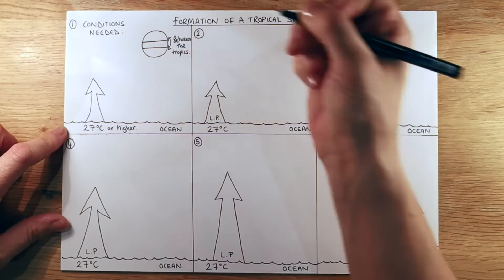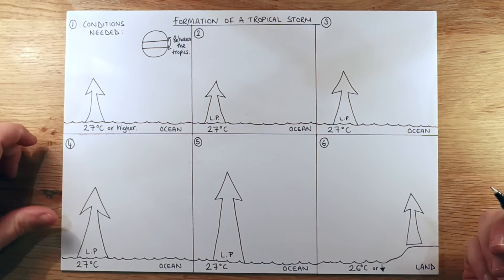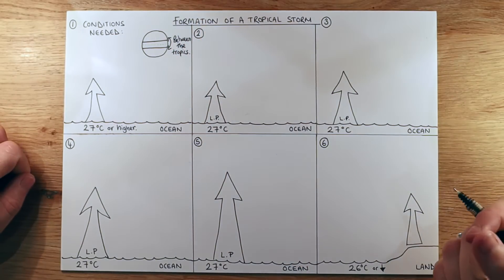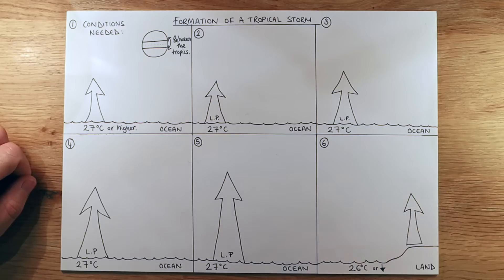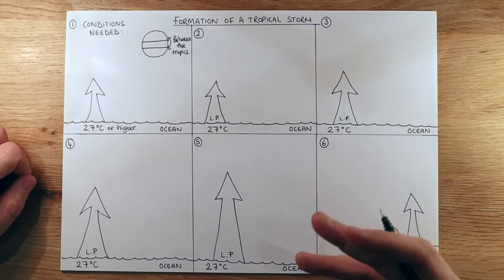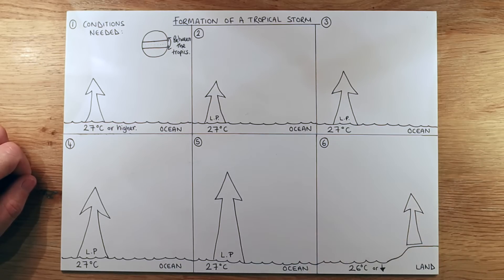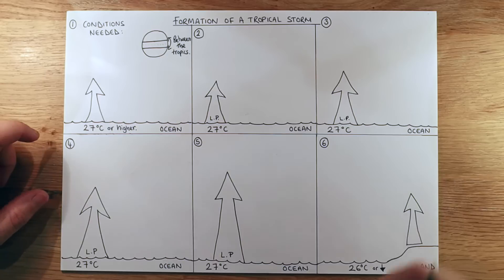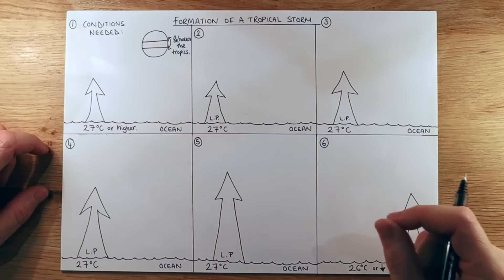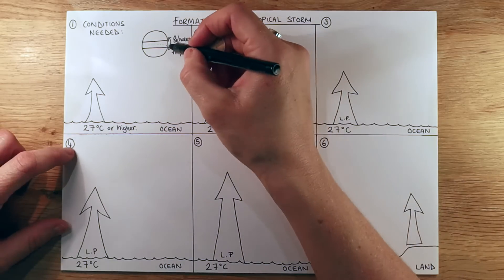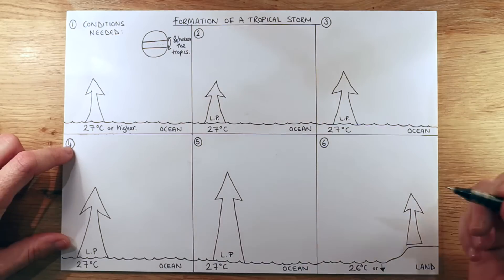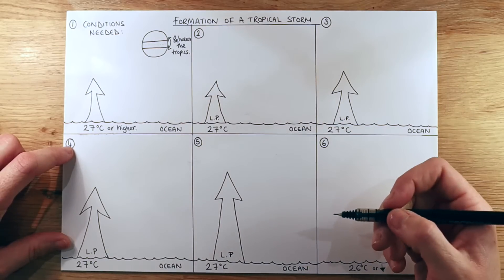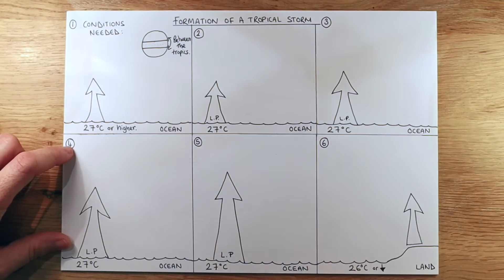With climate change, we are starting to see the intensity of tropical storms grow, and also the frequency and where they occur. So they're starting to sneak out a bit further from the tropics with climate change.